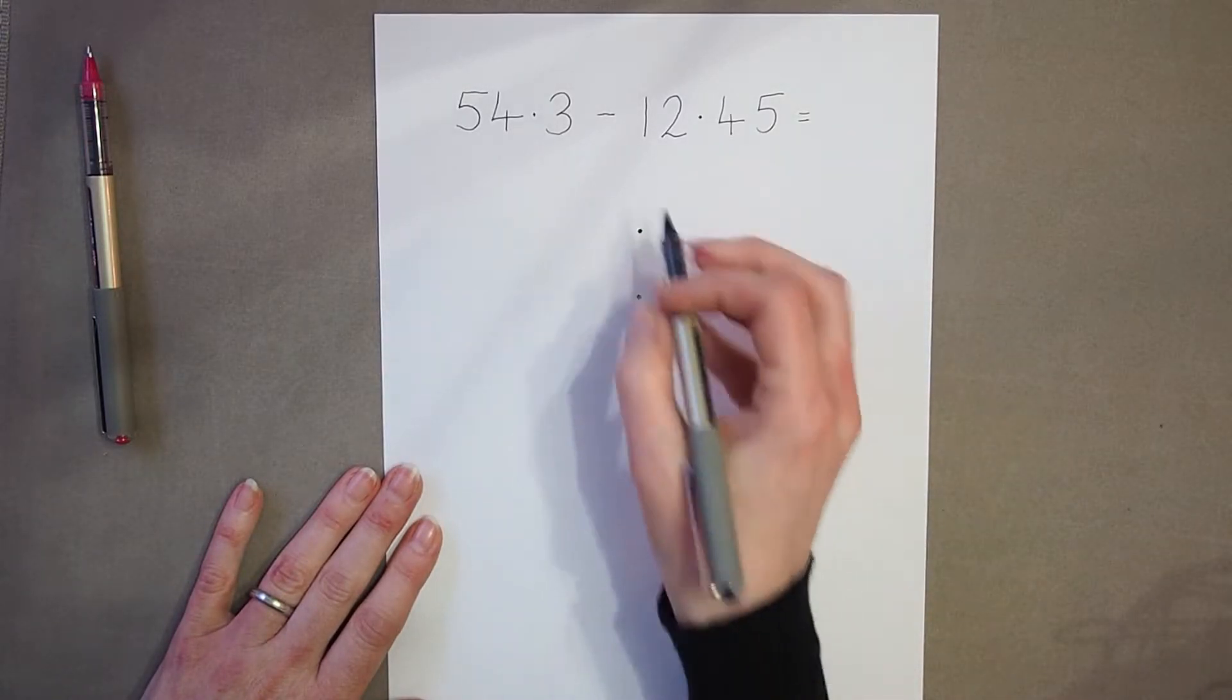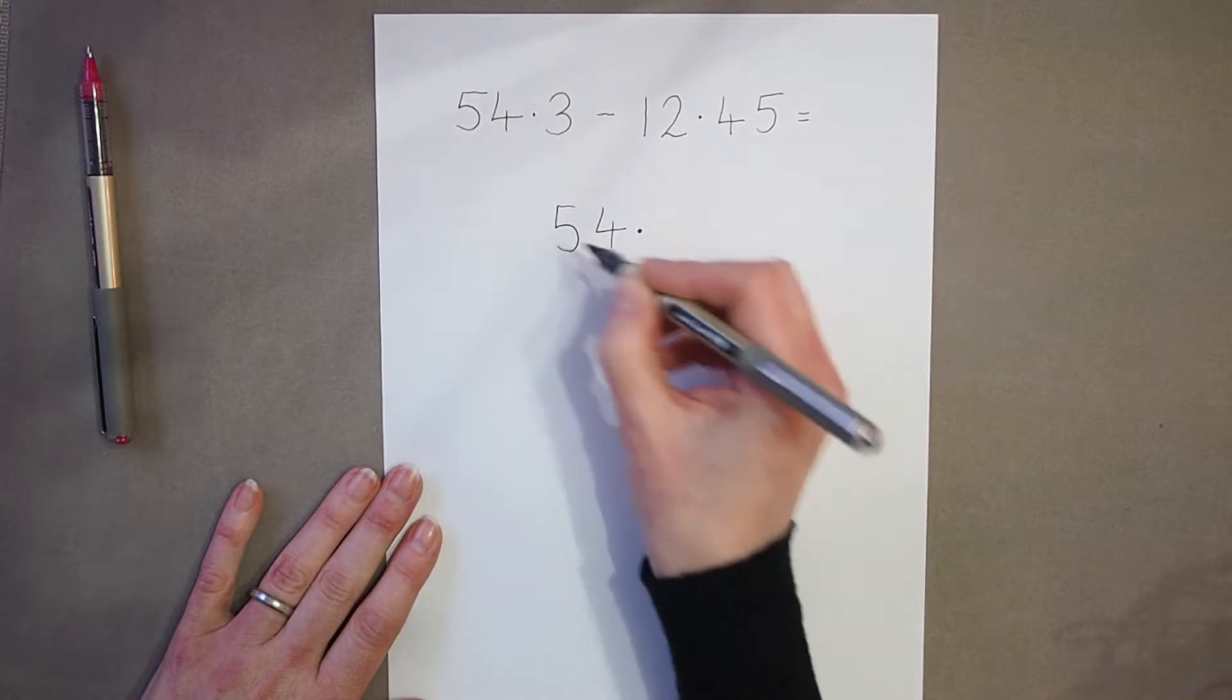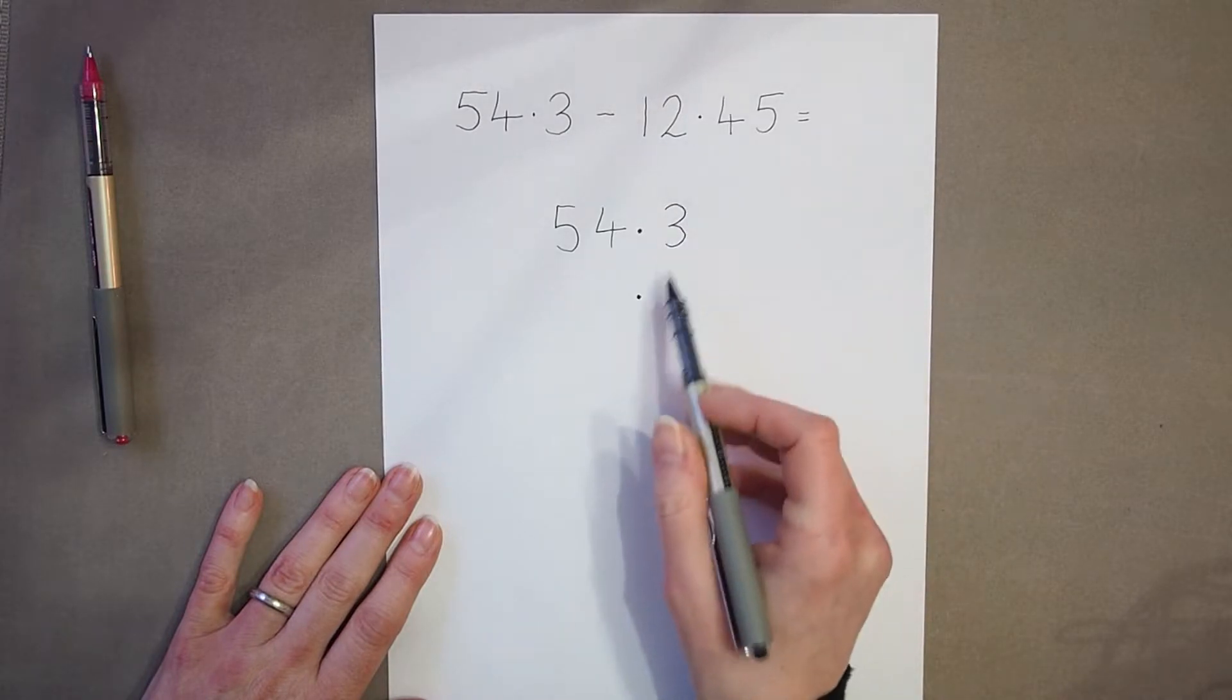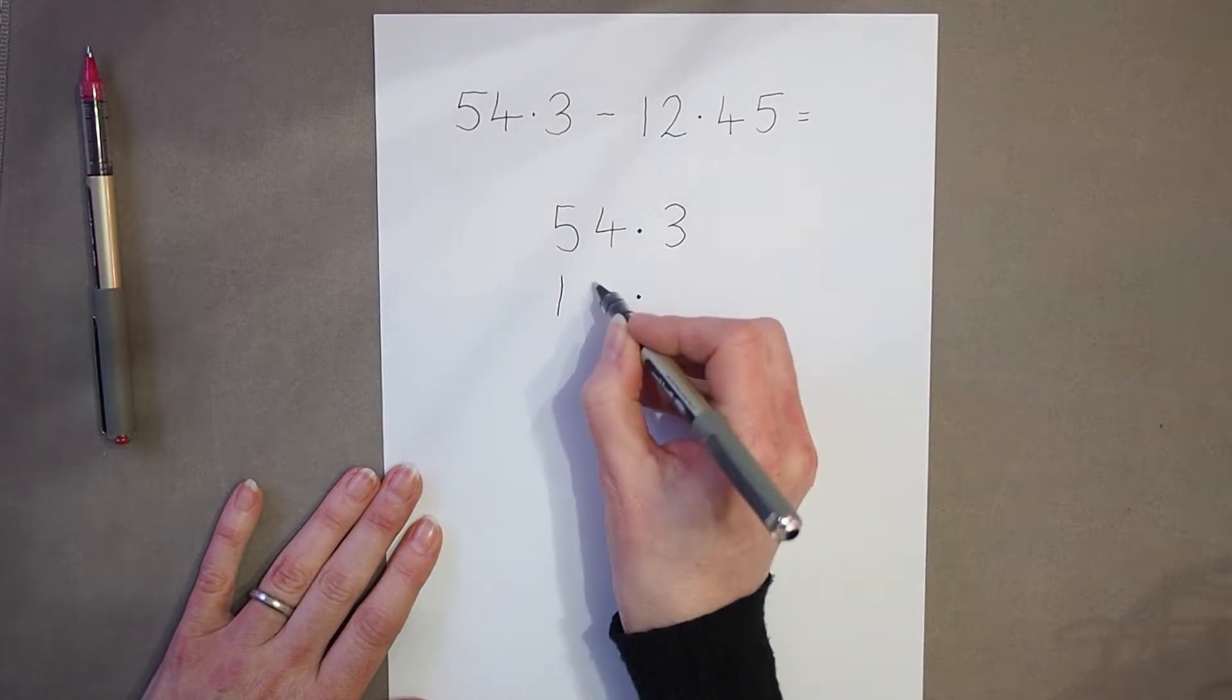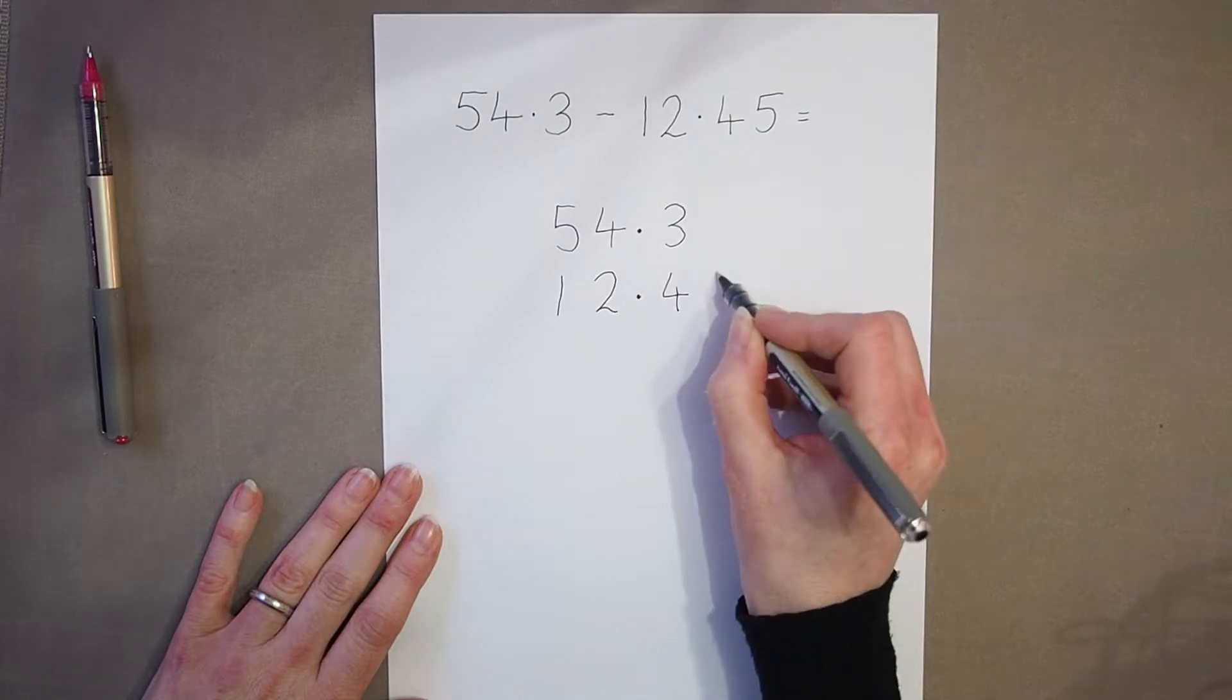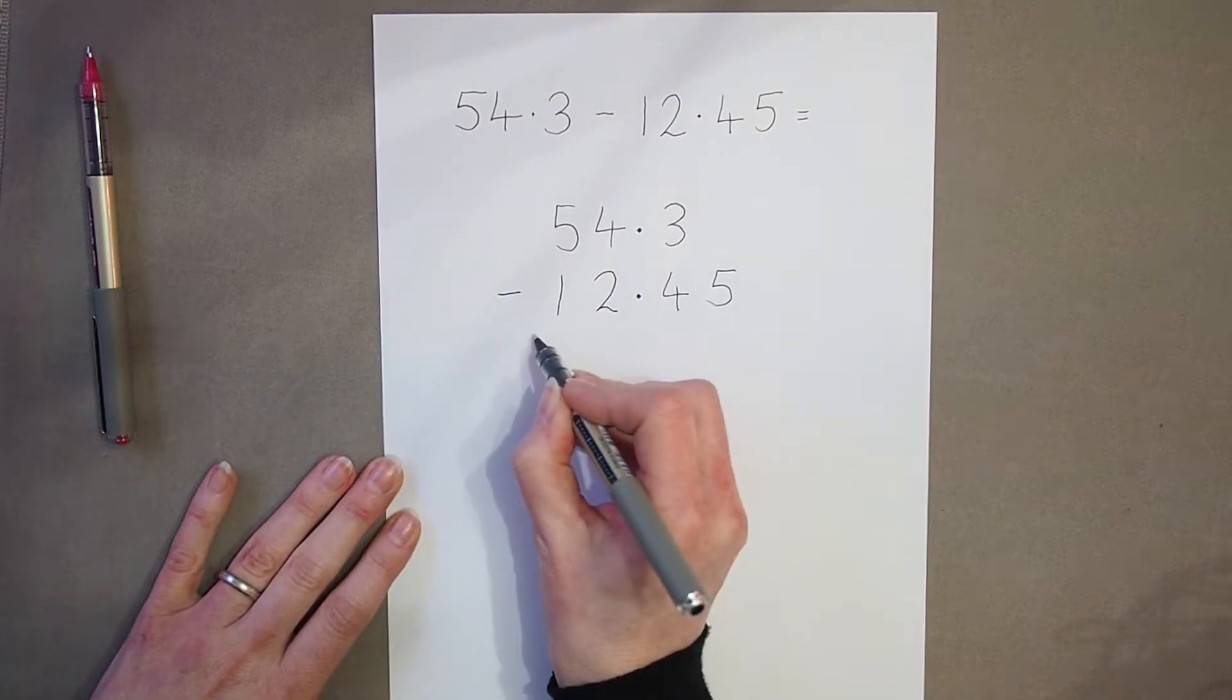So if I put the decimal points in place, I can write this first number in, then 54.3 and then underneath 12.45. And I'm subtracting.